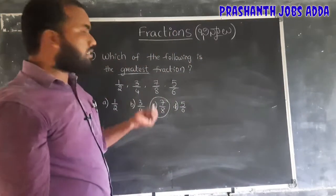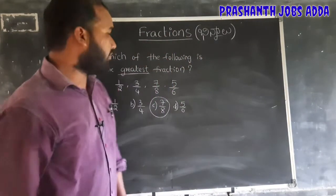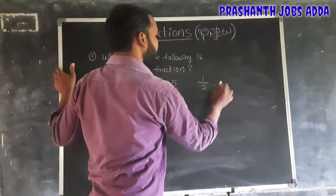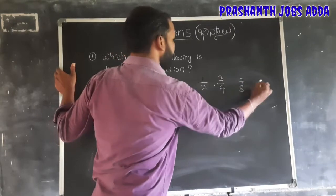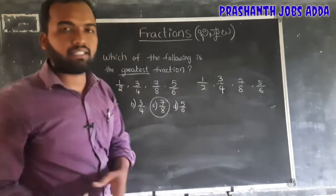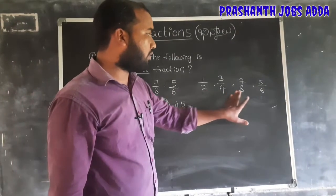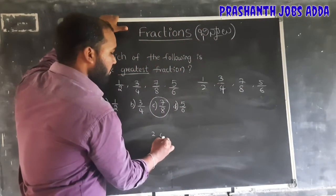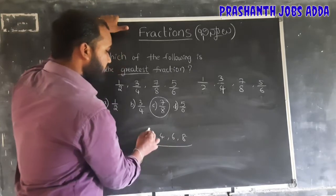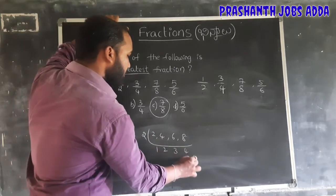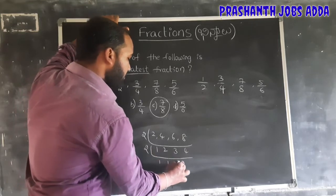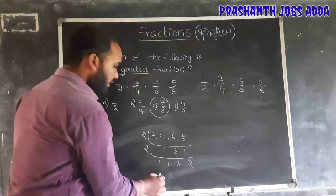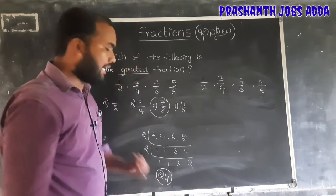Second method: the LCM method. For denominators 2, 4, 8, and 6, we calculate the LCM. LCM is 3 into 2 is 6, 6 into 12, 12 into 2 is 24. So 24 is the LCM.